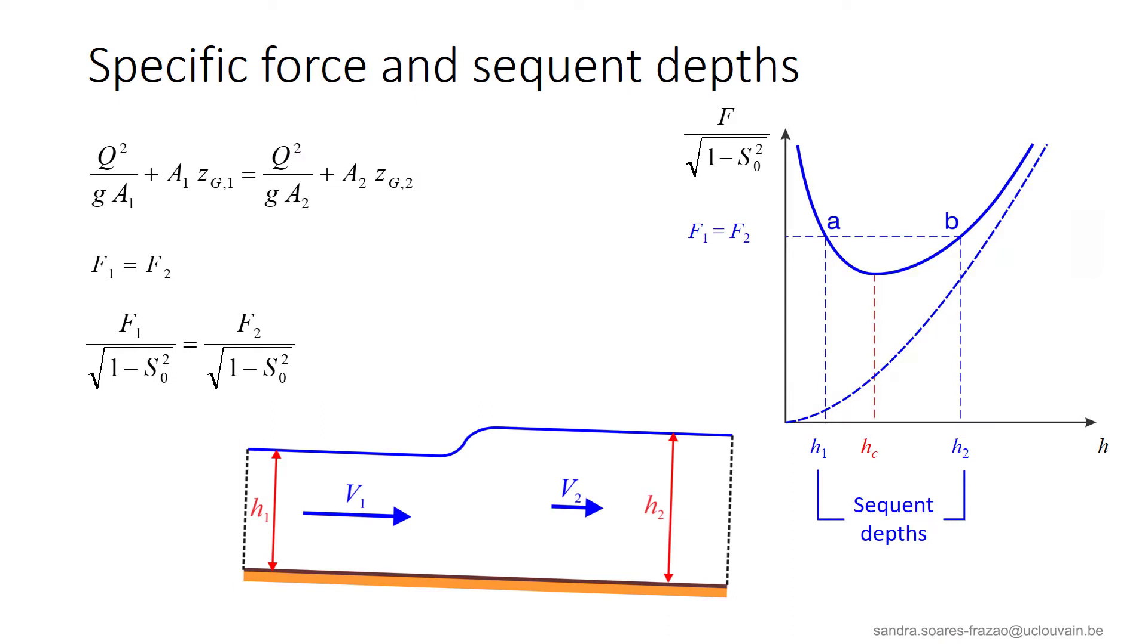We have shown that the specific force is conserved across a hydraulic jump. The two water depths, H1 and H2 in the equation, and illustrated here, are called the sequent depths. These are situated on either side of Hc. H1 is below Hc, while H2 is above Hc. This indicates that the hydraulic jump makes the link between a supercritical flow and a subcritical flow.